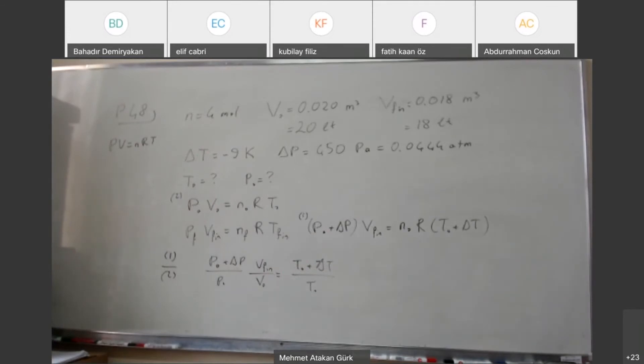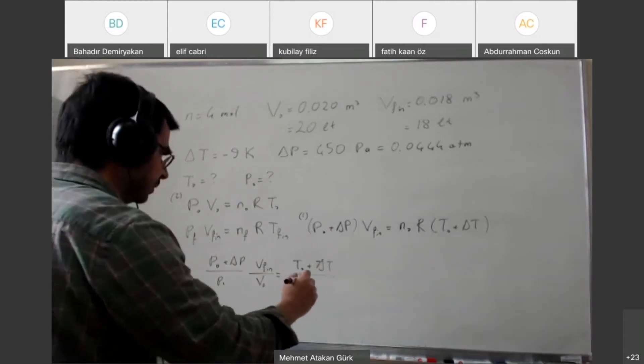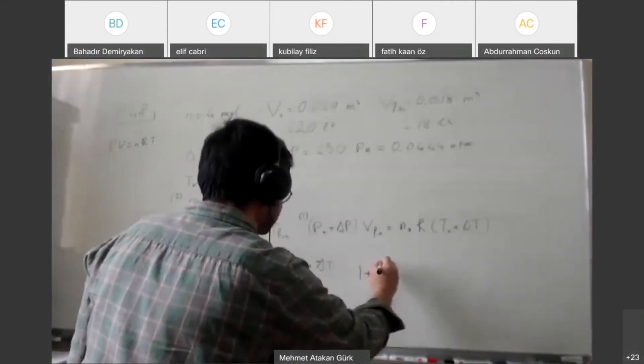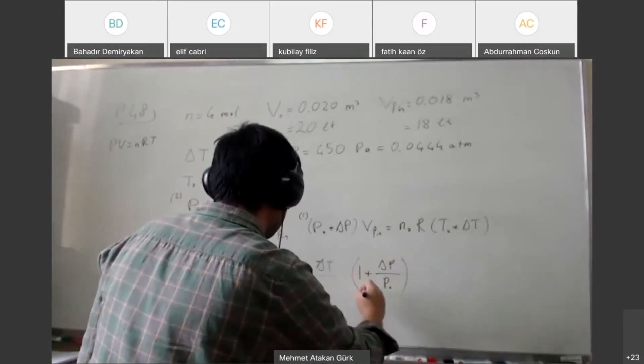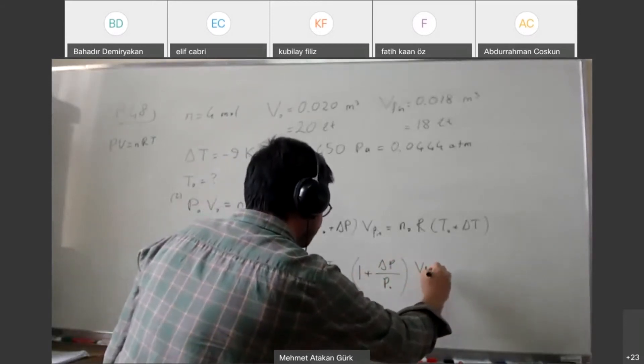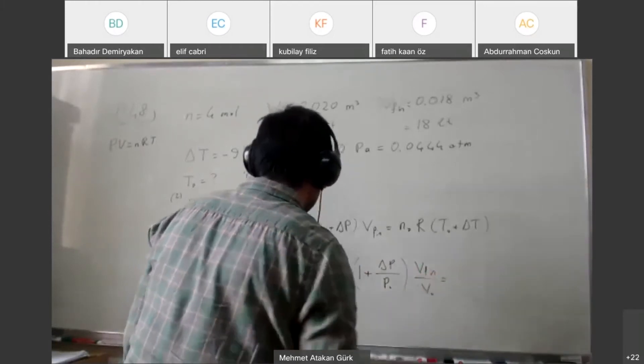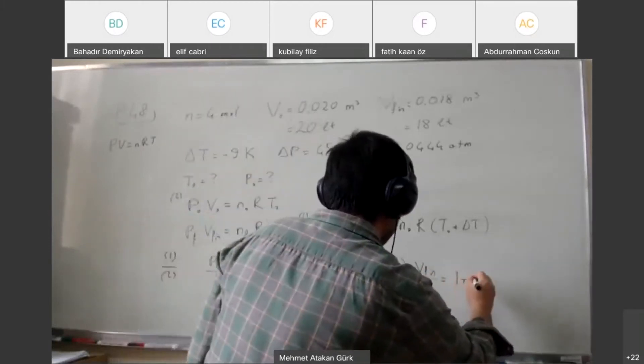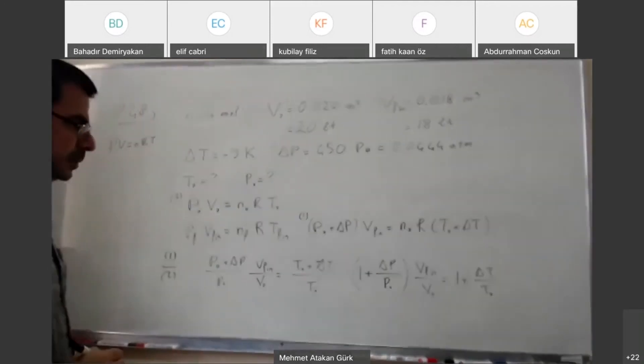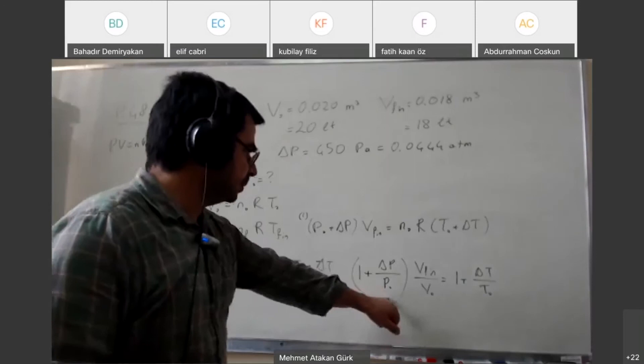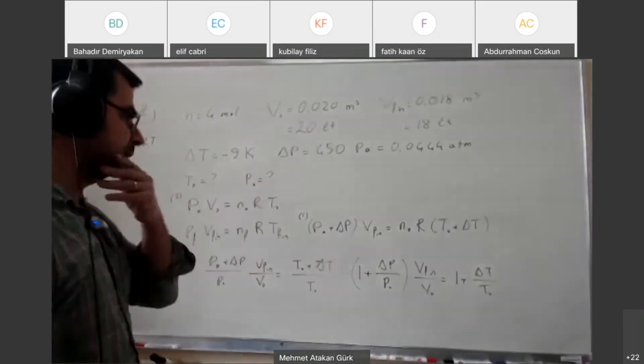So I'm going to have P0 plus delta P by P0 times V final by V0. n's cancel, r's cancel, T0 plus delta T by T0. We couldn't eliminate anything. But this still makes some progress.